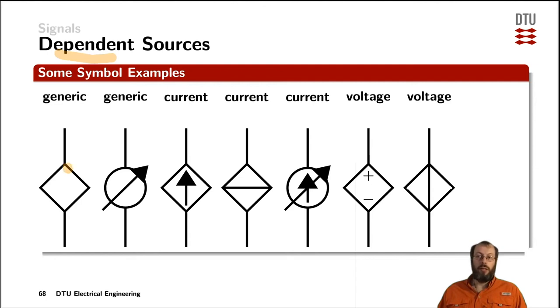First of all, you would indicate that a source is dependent either by drawing the symbol rectangular like a generic source here. Instead of drawing the signal round, you would draw it as a rectangular, as a square. Or in other cases, and this is the same meaning, you would put an arrow through it like in this case here. And if you want to indicate that it is actually a current source that is controlled, you either square the current symbol like in this case here or in that case.